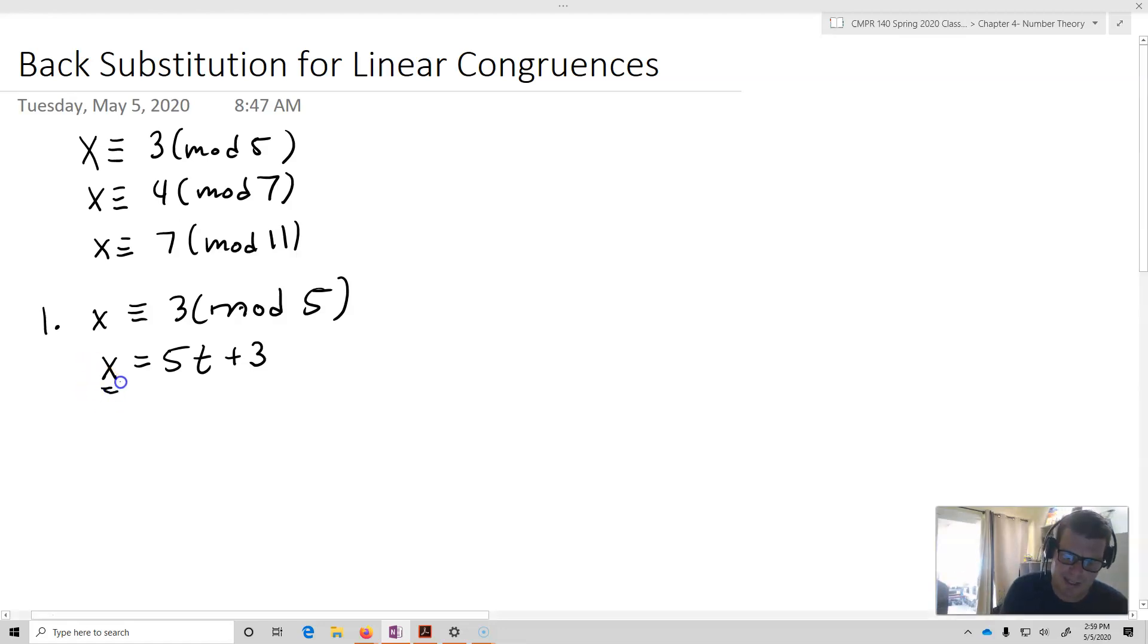Then what we're going to do is we're going to notice that x and x, we've got two x's here, so I'm going to substitute in. I'm going to take 5t plus 3, and that's going to be congruent then to 4 modulo 7. Now all I need to do is actually solve this particular modulus. I'll subtract 3, and that gives me 5t is going to be equivalent to 1 modulo 7.